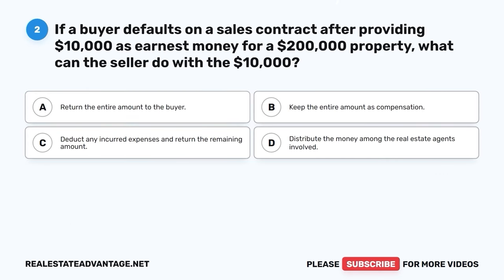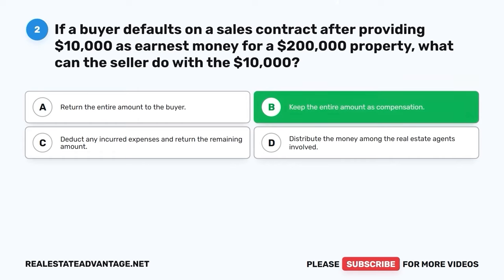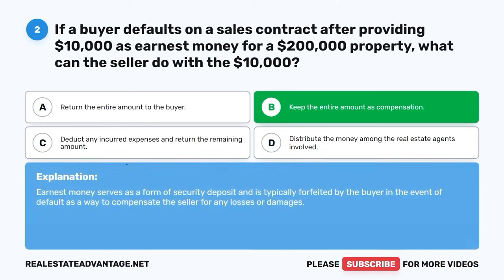Question 2. If a buyer defaults on a sales contract after providing $10,000 as earnest money for a $200,000 property, what can the seller do with the $10,000? A. Return the entire amount to the buyer. B. Keep the entire amount as compensation. C. Deduct any incurred expenses and return the remaining amount. D. Distribute the money among the real estate agents involved. The correct answer is B: Keep the entire amount as compensation. Earnest money serves as a form of security deposit and is typically forfeited by the buyer in the event of default as a way to compensate the seller for any losses or damages.